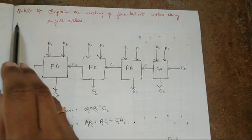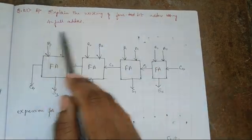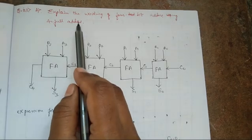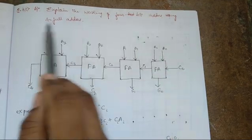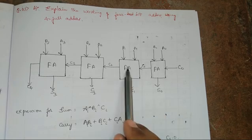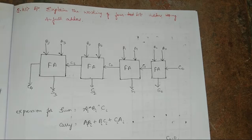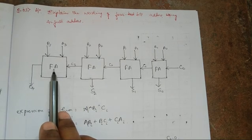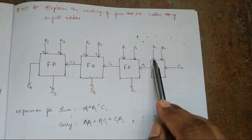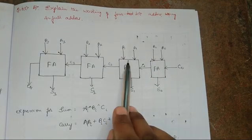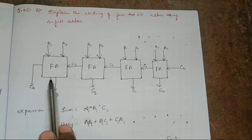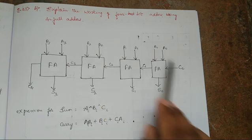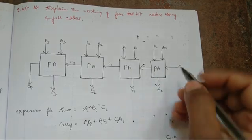The next question is 3b: explain the working of a four-bit adder using four full adders. We have used four full adders; each adder is used to add a single bit of information. In the block diagram we have FA1, FA2, FA3, and FA4 as the four full adders. While writing in an exam, draw this block diagram and then explain a few lines about it.